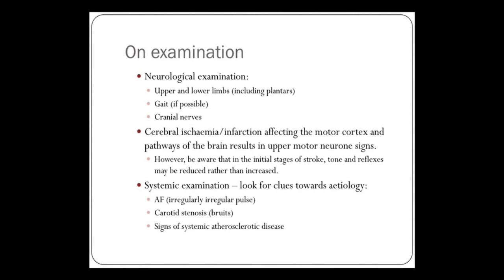And then the cranial nerves — in particular the facial nerve, supplying motor function of the face. You want to look for upper motor neuron facial nerve weakness. To do that, you look at the eyebrows. If the patient is able to raise both eyebrows but has a unilateral facial nerve deficit in the lower part of the face, that's indicative of an upper motor neuron facial nerve lesion, which is likely to be due to stroke.